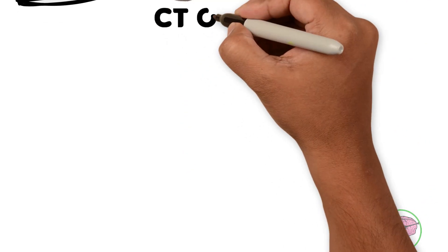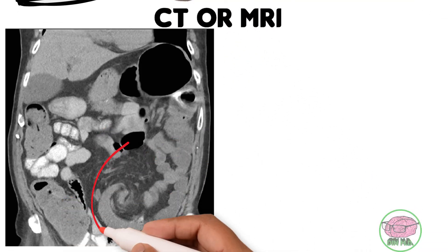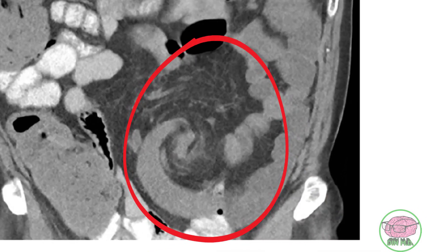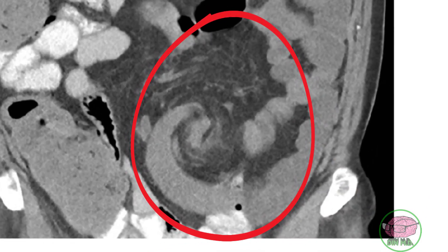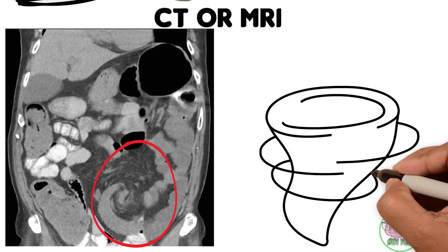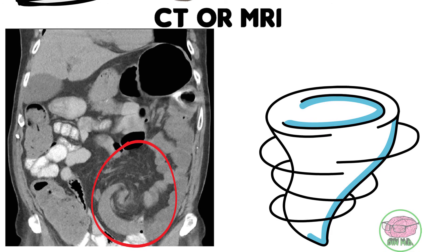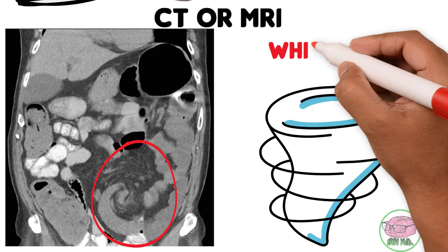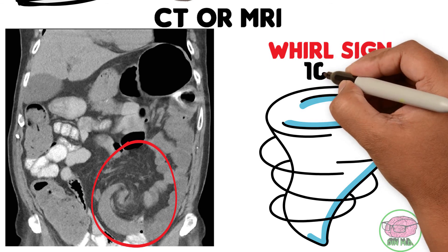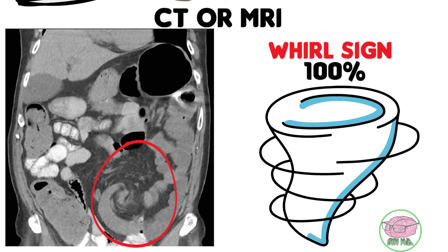Finally, CT or MRI reveals a characteristic image with gray areas in a specific pattern resembling a tornado — known as the Whirl sign or Whirlpool sign. CT scan or MRI was helpful in diagnosing 100 percent of patients.